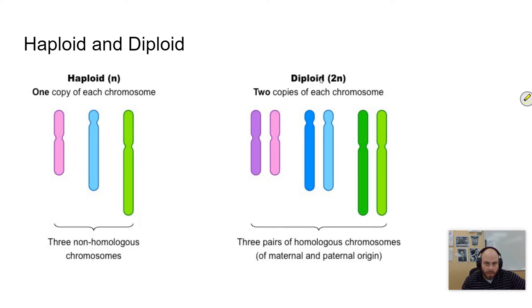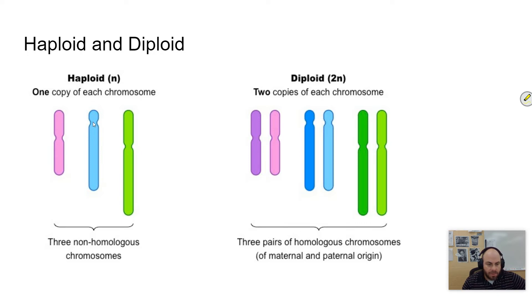In a human cell there are 23 pairs. Different organisms have different numbers of pairs, and you'll often use the 2N symbol to denote diploid. Haploid is where you have just one of those pairs — each sex cell gets a single one. When sexual reproduction occurs, that haploid combines with another haploid to create a diploid cell. So body cells are diploid (2N), and gametes or sex cells are haploid (N).